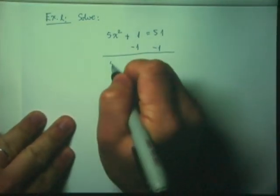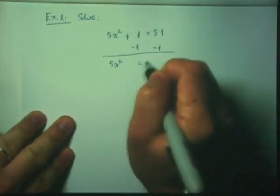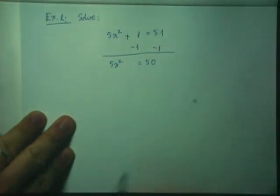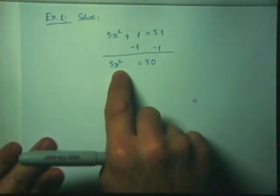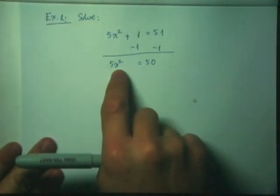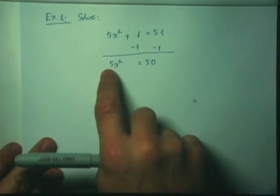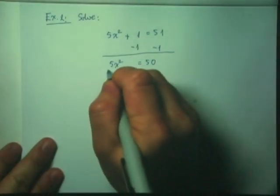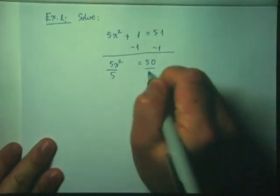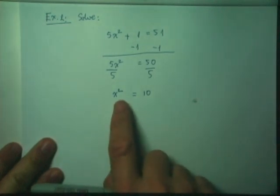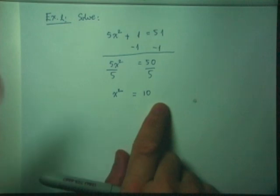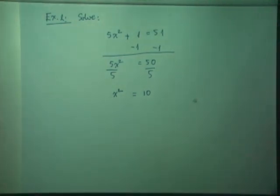That gives me 5X² equals 50. I'm almost at ordinary form, but X² is not singular — it's multiplied by 5. So I need to divide both sides by 5, which brings me to X² equals 10. Now I have a quadratic equation in ordinary form, ready to use the square root property.